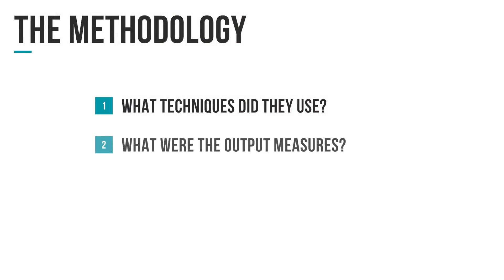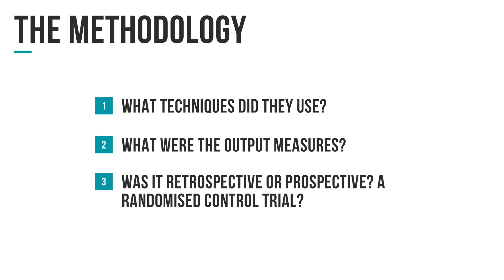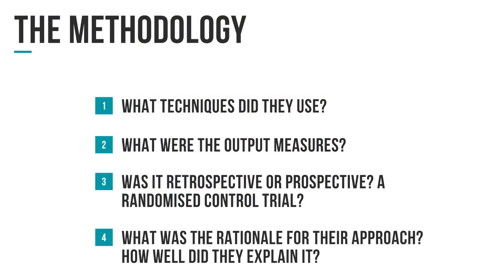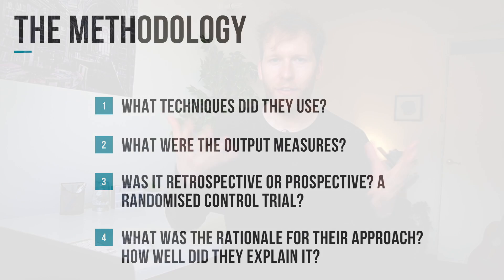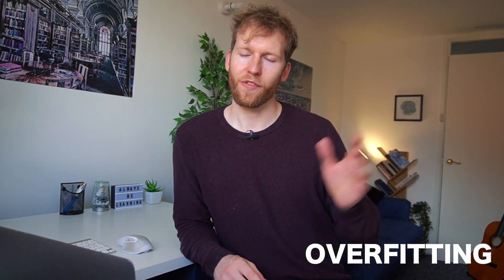It's also worth looking at what the output measures are — predicting classes, feeding into a referral decision, or detecting true positive and false positive rates in screening. There are many output types and different ways to measure them. Consider whether it's a retrospective or prospective study; prospective randomized controlled trials are generally better. Also assess how well the methodology is explained — if they don't describe steps like avoiding overfitting, that may cause you to question how much you trust the study.